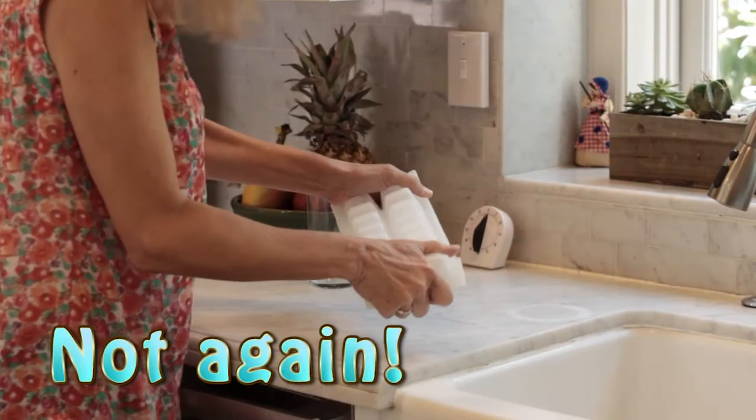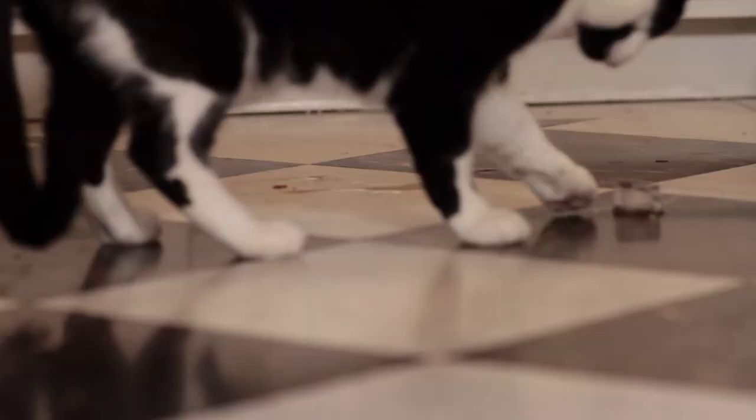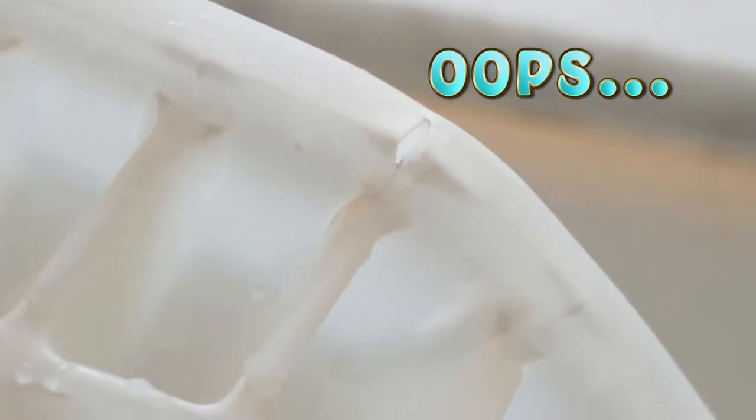I turn it upside down, they still won't come out. So I twist the tray and they fly through the air and end up on the floor or end up cracking my ice cube tray.